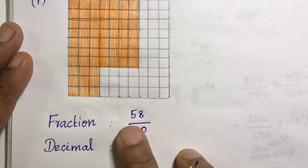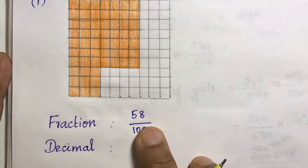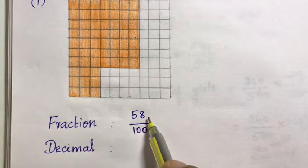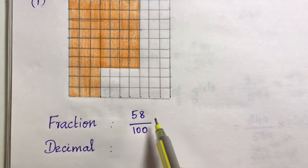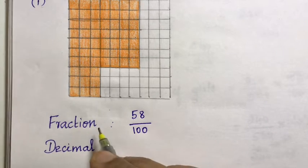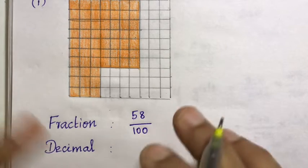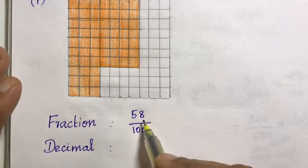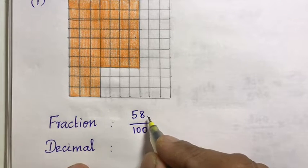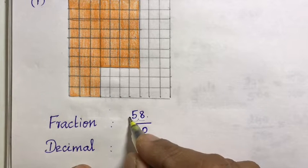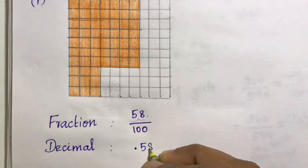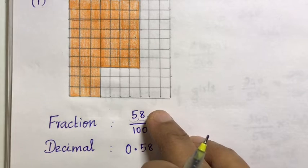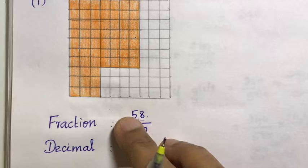Next, decimal form. The denominator is a multiple of 10 — here it is 100. To convert to decimal, move the decimal point two places to the left. So 58 by 100 gives a decimal point moved two places left: 0.58 is the decimal form.